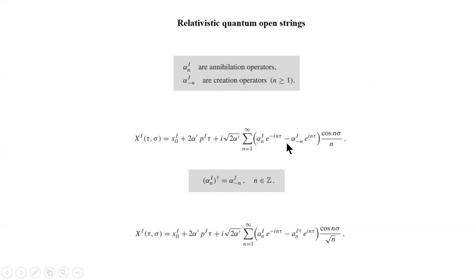So n refers to the mode. The sum over n refers to the mode, or when we are talking about the oscillator, we generally talk about the frequency, and now we are talking about the mode — different modes of vibration. Here each corresponds to one particular eigenvalue.